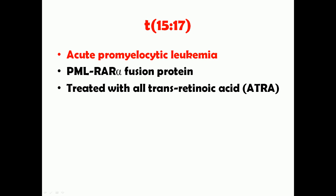Translocation of 15 and 17 is known as acute promyelocytic leukemia, abbreviated as APL. In APL, a mutation leads to formation of a PML-RARα fusion protein that affects maturation of precursor cells. This can be successfully treated with a drug known as all-trans-retinoic acid, abbreviated as ATRA.